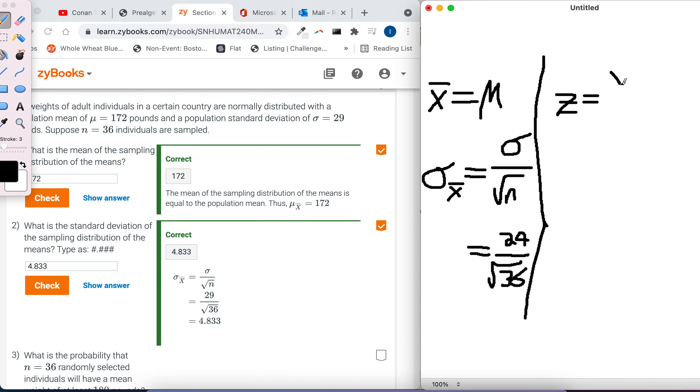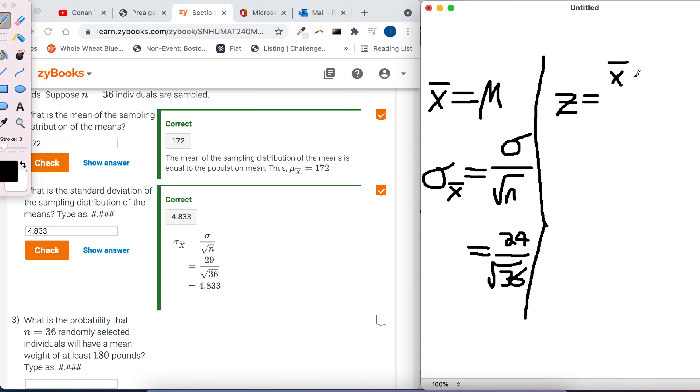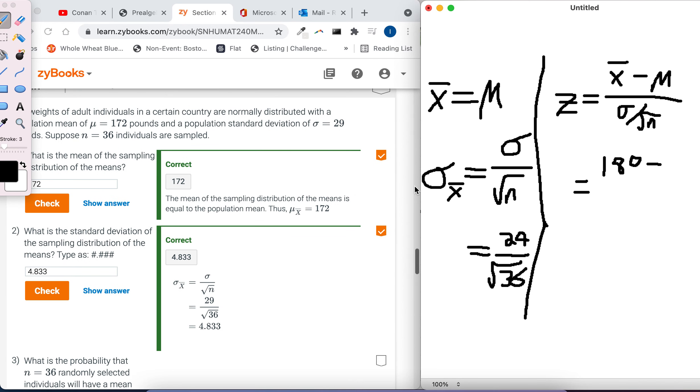We can use the z-score formula for sample means. And that formula says you take the sample mean you're hypothesizing, which is 180 for my question, and subtract that by what the population mean is, and then divide by the standard deviation of the means by the population mean sigma over the square root of n. So if you plug in those numbers, we're hypothesizing a mean of 180.